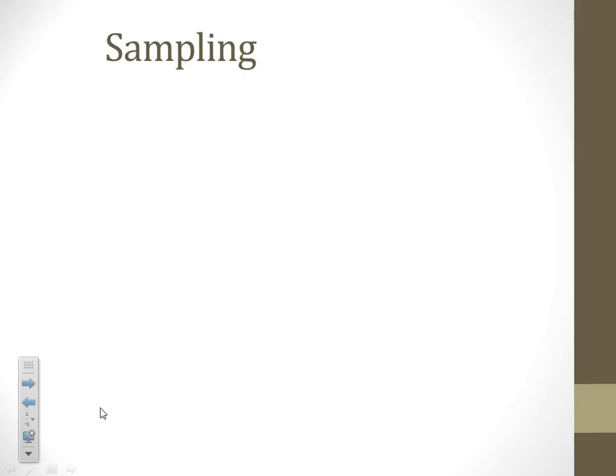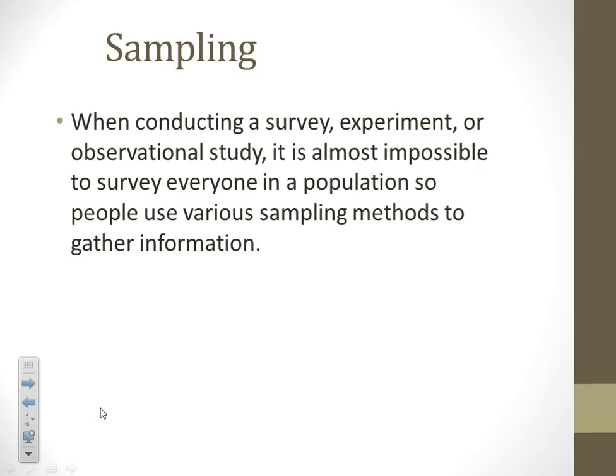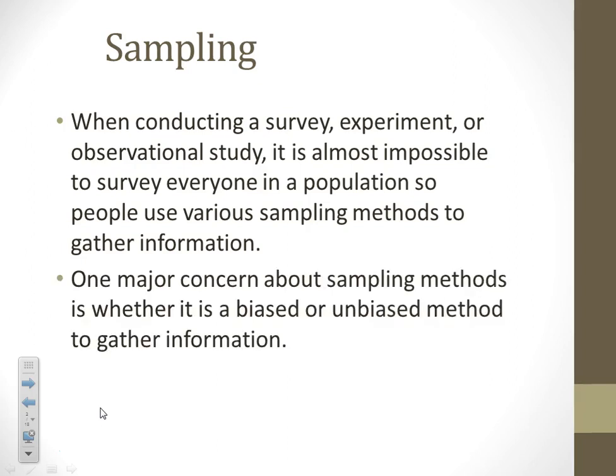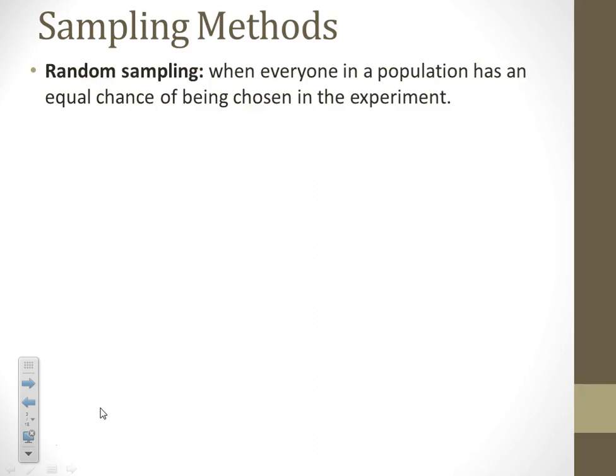Next thing we need to talk about is sampling. There are several different types of sampling that we can use when we're trying to conduct a survey. The reason why we do sampling is because it's almost impossible to survey or experiment on everyone in the population. So we need a way to gather a sample of people, but we've got to make sure that it's unbiased. Some sampling methods can be biased based on how those samples are chosen.